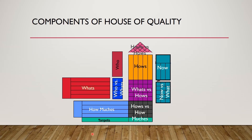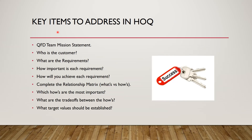Here is an example of a house of quality. The next key item to address in HOQ is the team mission statement. Who is the customer? What are the requirements? How important is each requirement? And how will you achieve each requirement? Then we complete the relationship matrix. Finally, we answer the last three questions: which hows are the most important, which are the trade-offs between the hows, and what target values should be established?